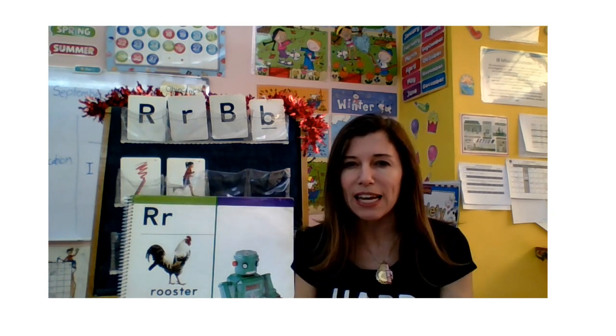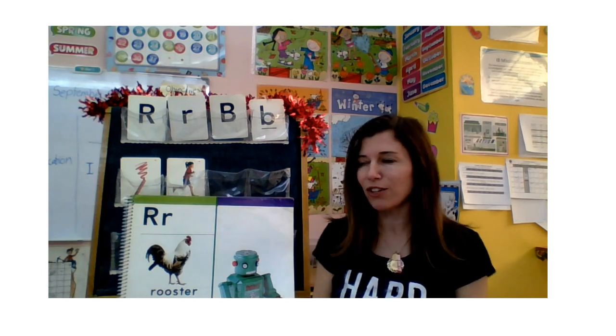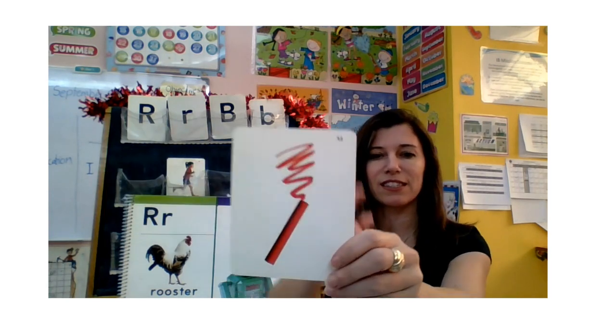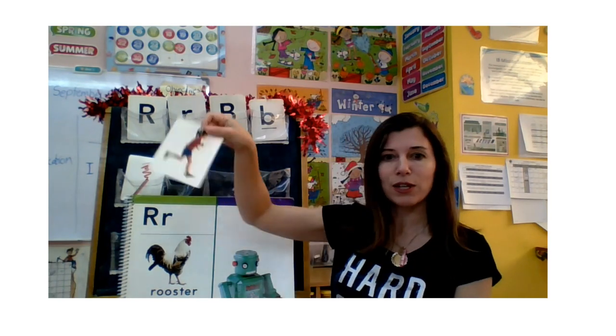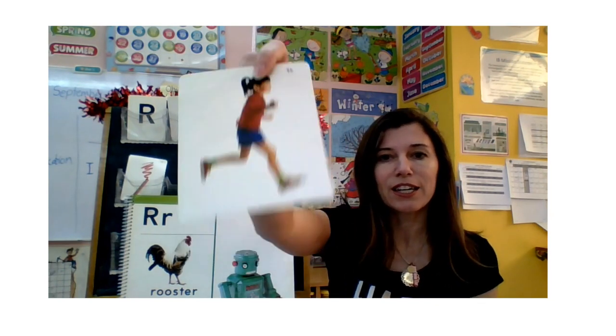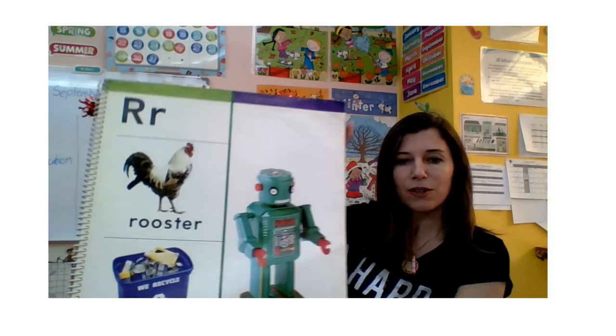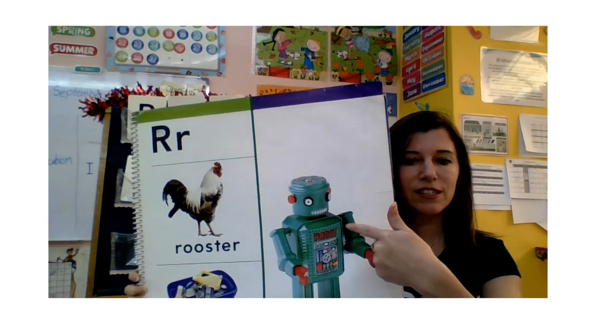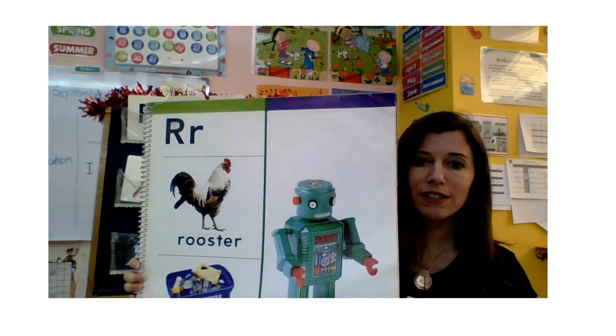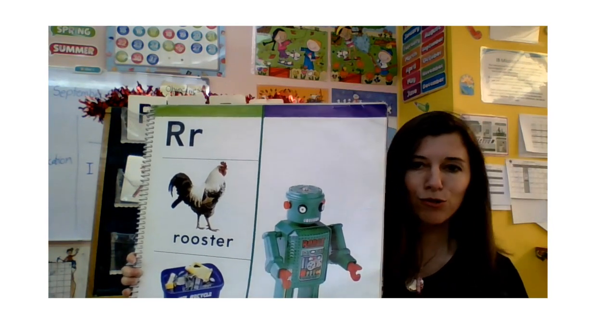Let's take a look at the letter R first. Do you know what sound the letter R makes? R. Can you think of words that begin with R? Look at the pictures I have. What color is this? Red. Super. And this one? Run. Do you see this? What begins with R? What's this? Robot.